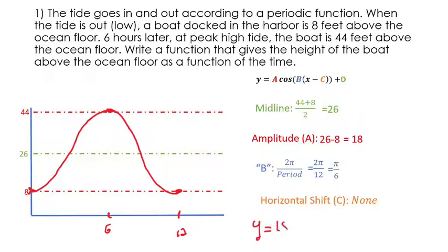Y equals 18, because 18 is the amplitude. And then we're going to use cosine, because we're starting at a minimum. If our graph started on the midline, it would be best to use sine. But since it starts at a minimum, we're going to use cosine. And because of that, I'm going to throw a negative in front of that 18.